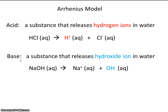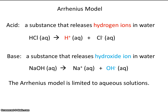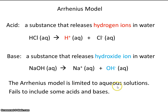Now, the Arrhenius model of acids and bases is an older model, and it turns out it's not as inclusive as the Bronsted and Lowry model. The Arrhenius model limits us to acids that are in an aqueous solution, and it also fails to include some acids and bases.